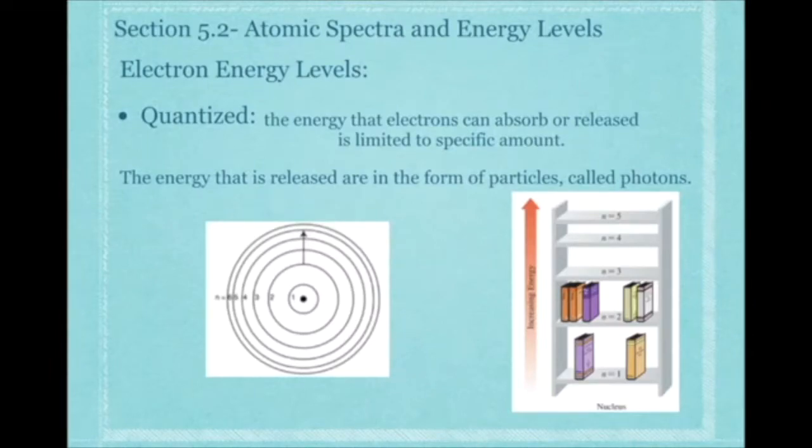The same thing applies for electrons. Electrons can be in the first energy level, the second, the third, the fourth, the fifth, but they can't be in between. When they move from n equals 1 to n equals 2 or from n equals 2 back down to n equals 1, there's a very specific amount of energy that's required to make that transition. It's not going to be an in-between energy; it's quantized.